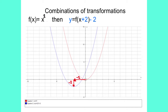You can, of course, combine transformations. So if we start with the graph of f of x equals x squared, and then draw the graph y equals f of x plus 2 in brackets minus 2, you can see that the original graph is moved two spaces to the left — that is the plus 2 — and two spaces down, which is the minus 2. So 0, 0 becomes minus 2, minus 2.